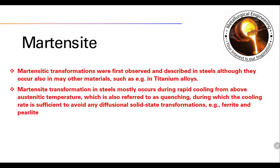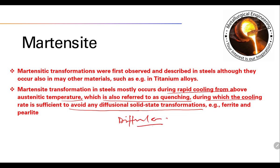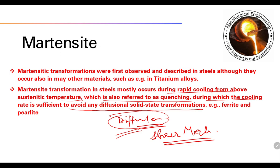Martensitic transformation in steels mostly occurs during rapid cooling from above the austenitic temperature, which is also referred to as quenching, during which the cooling rate is sufficient to avoid any diffusional solid-state transformation — that is, it is a diffusionless transformation. This shear mechanism means there is no diffusion; if there is no diffusion and the shear mechanism is active, martensite will form.